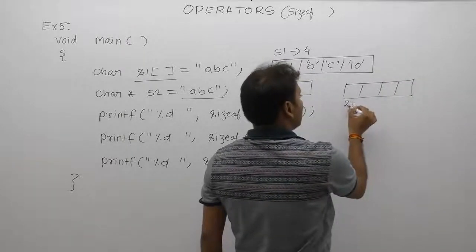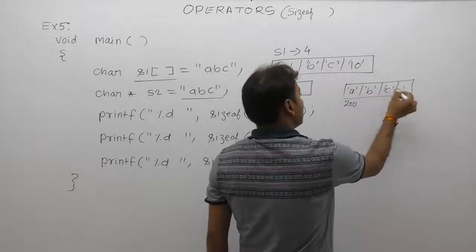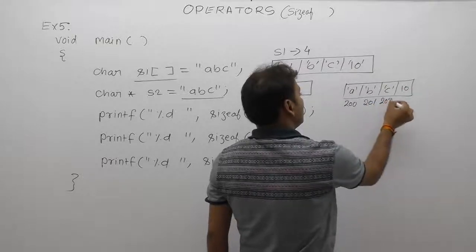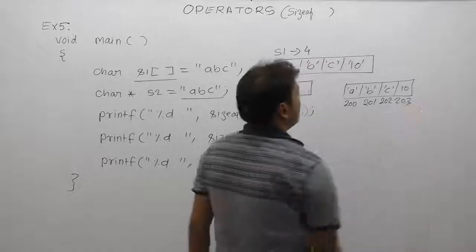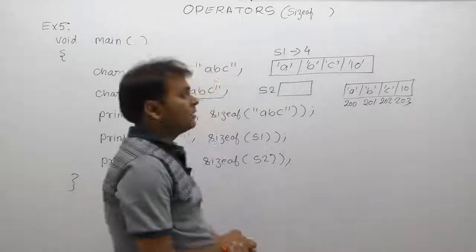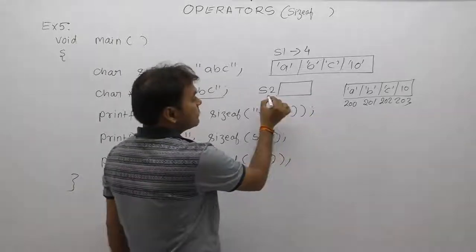Assigning character A, character B, character C, and null at addresses 200, 201, 202, 203. We are discussing in detail about strings during arrays or pointers. Until now, only basics of strings. In that case, s2 is a pointer.